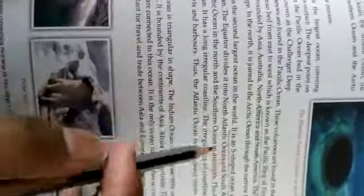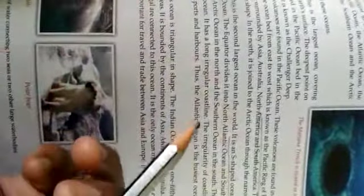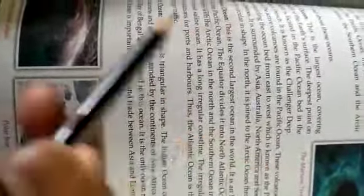The equator divided it into North Atlantic Ocean and South Atlantic Ocean. It merged with the Arctic Ocean in the North and the Southern Ocean in the South. The Atlantic Ocean is the most saline ocean.